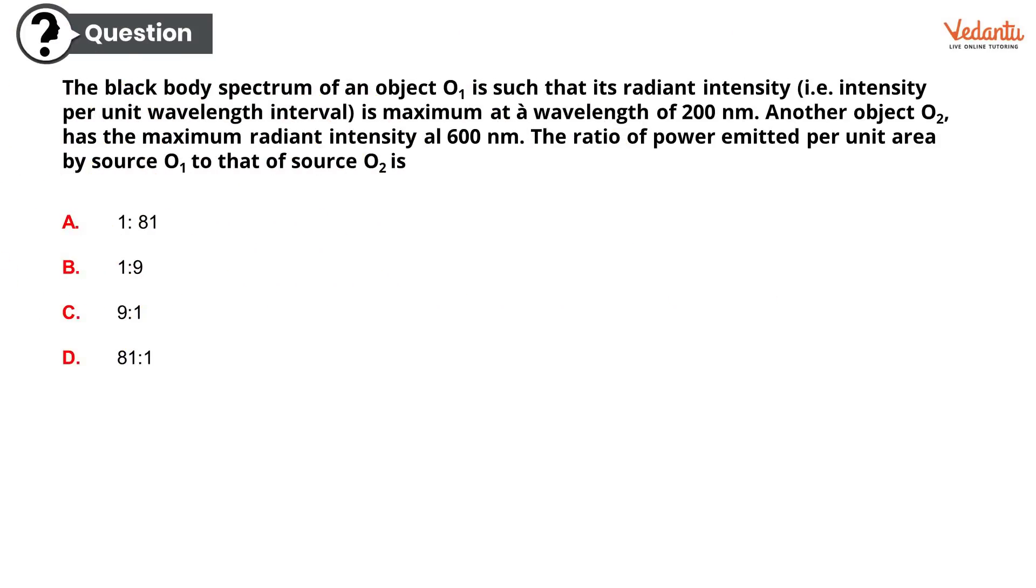A big question with small answers. The blackbody spectrum of an object O1 is such that its radiant intensity (intensity per unit wavelength interval) is maximum at a wavelength of 200 nanometers. Another object O2 has the maximum radiant intensity at 600 nanometers. The ratio of power emitted per unit area by source O1 to that of source O2 is how much? Options are: option A 1 is to 81, option B 1 is to 9, option C 9 is to 1, or option D 81 is to 1. A very simple question, isn't it? No it is not. I know. If you know the formula you can do this. The correct option is option D, 81 is to 1.